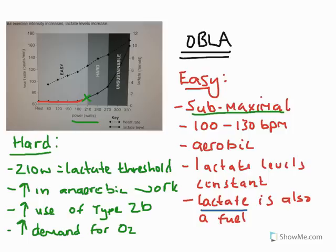As we can see from the heart rate increasing, we have an elevation in cardiorespiratory responses to this exercise — the heart rate goes up, and we could also talk about increased pulmonary ventilation and increased minute ventilation. We are taking on board more air and therefore more oxygen at the lung. However, we cannot meet the demand for oxygen with a sufficient supply, so we have to power the remaining work anaerobically.